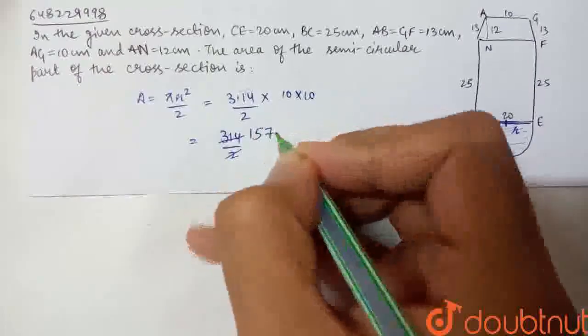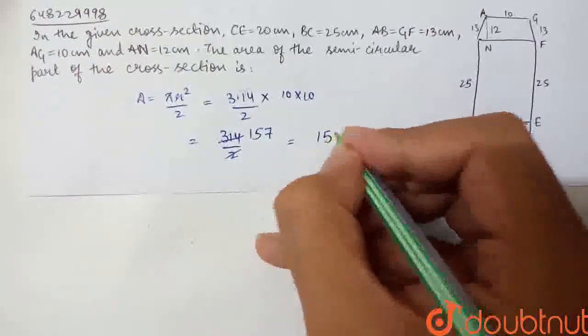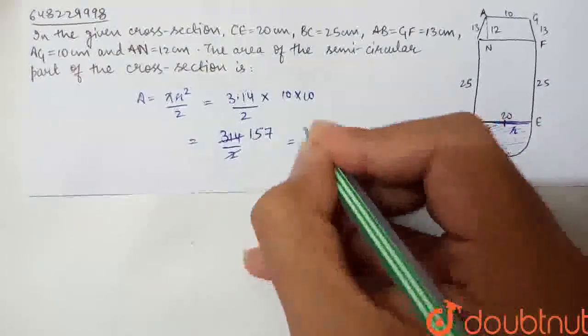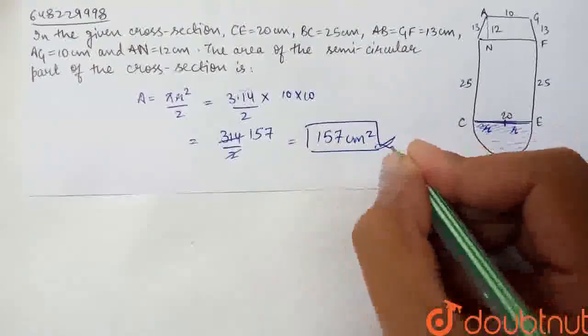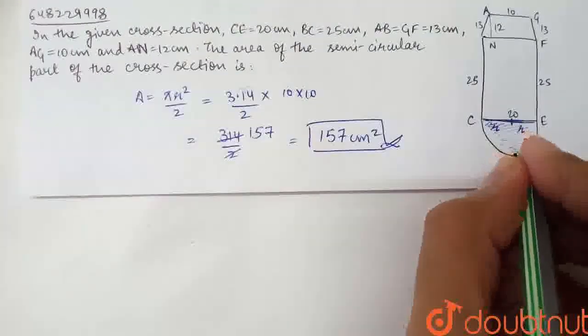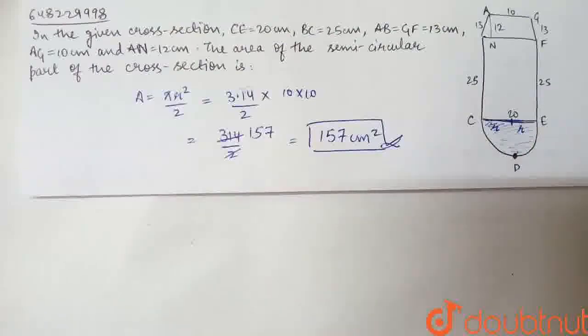This is 1, 5, 7. Therefore, the answer is 157 cm². So this is the required area of the semicircular region given in the cross section.